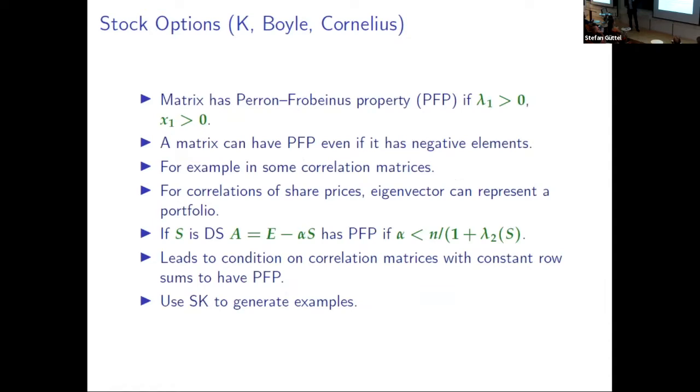Matrices with a Perron-Frobenius property. These are matrices which have a dominant positive eigenvalue, and the eigenvector is all positive as well. The matrix itself, in the Perron-Frobenius theory, this is done for non-negative matrices. The matrix can have negative entries as well. We've looked at how big those entries can go. We can use doubly stochastic matrices to start with. Checking whether these are correlation matrices, they have the sign pattern we need, but we need more than that, can be a little bit tricky.